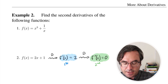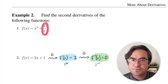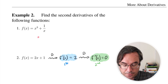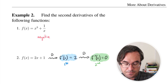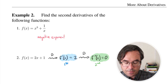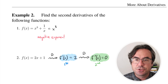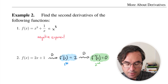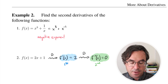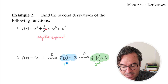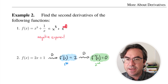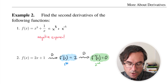Before we differentiate, it's usually a good idea to rewrite fractions using a negative exponent. So let's rewrite this formula first. The x cubed is fine — we can just do regular power rule on that. But we're going to write that 1 over x as x raised to the minus 1. Remember, with negative exponents, there's a hidden exponent of 1 there. If we get rid of the fraction, we keep the exponent but just make it negative.